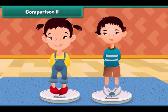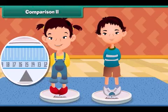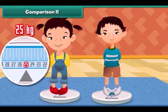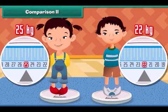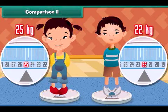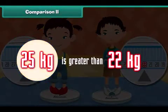Two children measure their weight. The weight of the first child is 25 kilograms and the weight of the second child is 22 kilograms. It is right to say that the weight of the first child is greater than the second one.